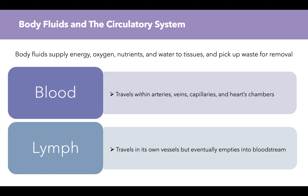And that is where we're going to start — body fluids and the circulatory system. Our body fluids supply energy, oxygen, nutrients, and water to tissues and pick up waste for removal. The two body fluids we focus on here are blood and lymph. Blood travels within arteries, veins, capillaries, and the heart's chambers. Lymph travels in its own vessels but eventually empties into the bloodstream.